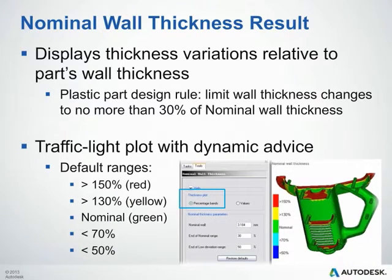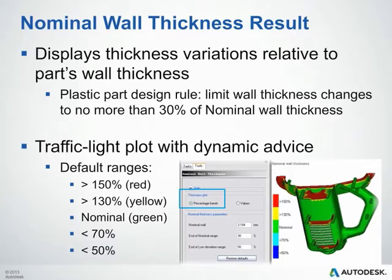The nominal wall thickness result essentially displays the thickness variations relative to our part's nominal wall thickness. As a general rule of thumb, we like to limit our wall thickness changes to no more than 30% of our nominal wall. This plot will be displayed in a traffic light plot with dynamic advice. Anything shown in red is greater than 150% of our nominal wall. Anything greater than 130% but less than 150% is yellow. Anything green will either be our nominal wall or within our 30% tolerance. Areas that may be thinner than our nominal wall are represented by the blue colors.